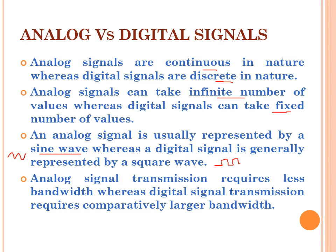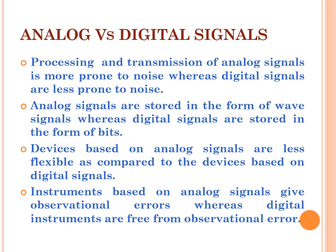Analog signals require less bandwidth for transmission, but digital signals require comparatively larger bandwidth. Analog signals' processing and transmission is more prone to noise, but digital signals are less prone to noise. Analog signals are stored in the form of waves, but digital signals are stored in the form of bits, like 0 and 1. Devices based on analog signals are less flexible compared to devices based on digital signals. Instruments based on analog signals can give observational errors, but instruments based on digital signals are free from observational errors.